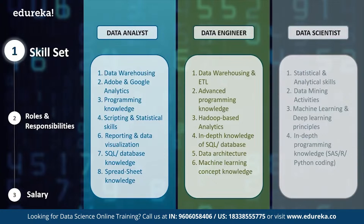Finally, a data scientist needs to be a master of both worlds — data, stats, and math — along with in-depth programming knowledge of machine learning and deep learning. The job description for an ideal data scientist includes statistical and analytical skills, various data mining activities, machine learning and deep learning principles and algorithms, and in-depth programming knowledge in languages such as SAS, R, or Python. Now that you have a complete understanding of the skill sets needed for each role, let's look at the typical roles and responsibilities of these professionals.